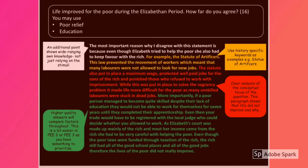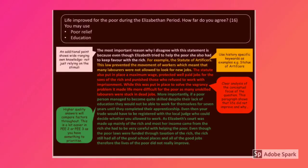'More importantly, life did not improve for the poor people because Elizabeth had to make sure that she was looking after the rich more. For example, the Statute of Artificers prevented the movement of workers, which meant that many labourers were not allowed to look for new jobs. It also put in place a maximum wage, protected well-paid jobs for the rich, and punished those who refused to work with imprisonment. While this was put in place to solve the vagrancy problem, it made life more difficult for the poor as many unskilled labourers were stuck in dead-end jobs. Also, if a poor person managed to become quite skilled despite their lack of education, they would not be able to work for themselves for seven years until they completed their apprenticeship.'